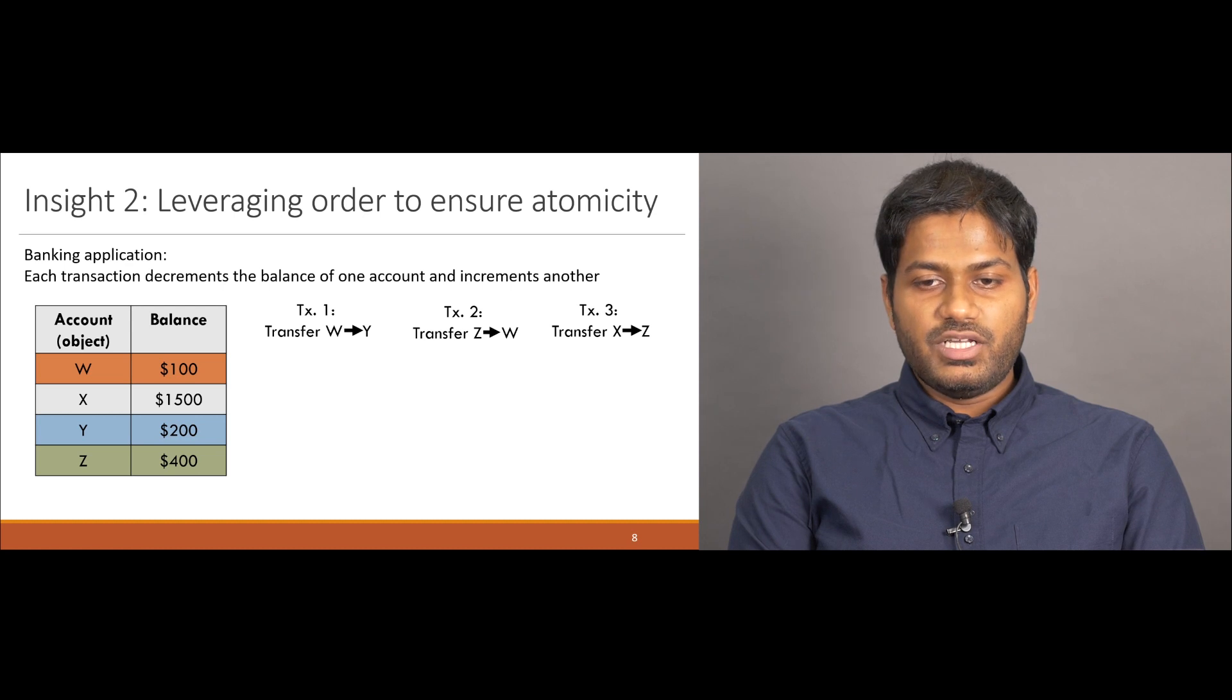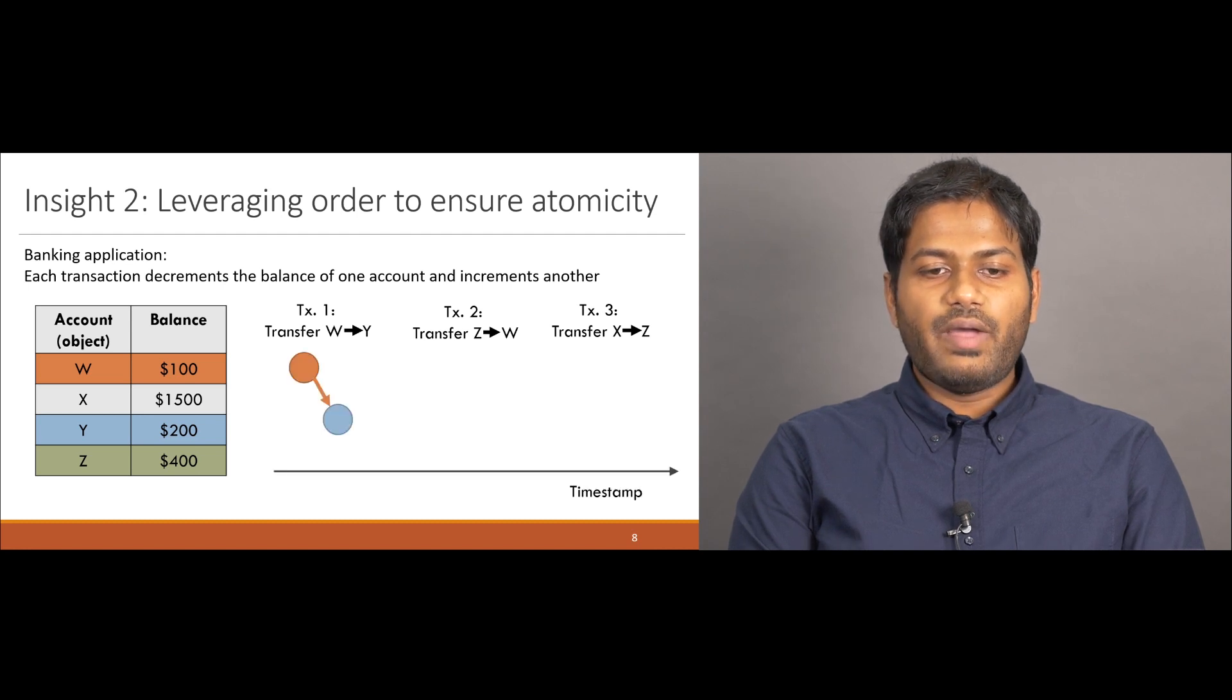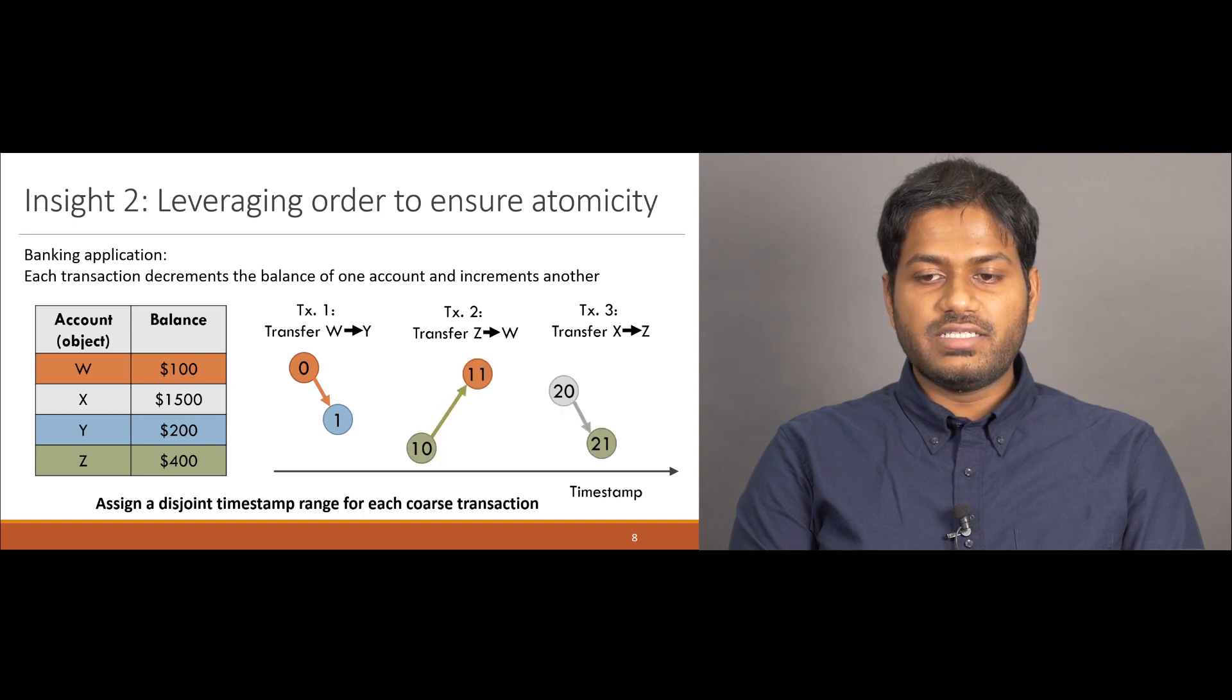Consider a banking application where transactions transfer money between accounts. Each transaction must atomically decrement the balance of one account and increment the balance of another, requiring atomic access to two different objects. We propose to manually divide the large transactions into two fine-grained tasks that access a single object each, with the first task spawning the second. To ensure original order, we give timestamps to each task. To make sure that different transactions do not interleave, each transaction is assigned a disjoint timestamp range. This technique generalizes to any arbitrary combinations of reads and writes.